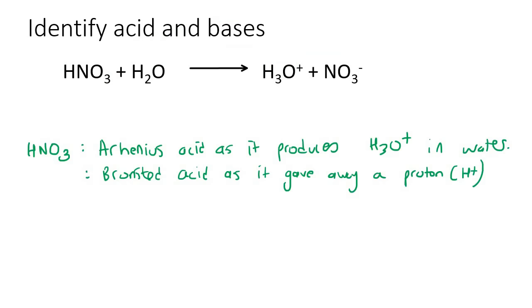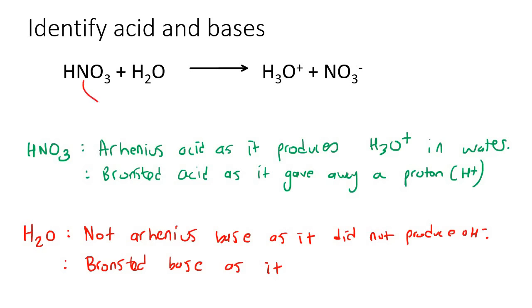Now we can have a look at the H2O molecule. And what we can see is that it is not an Arrhenius base, as it did not produce OH-. We can't see any OH- in the product. However, it will be a Bronsted base. It accepted a hydrogen, or it accepted a proton.